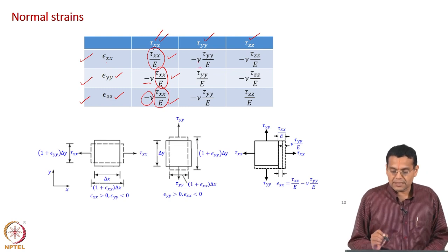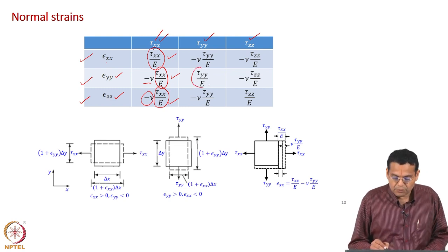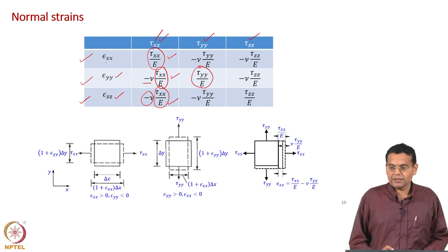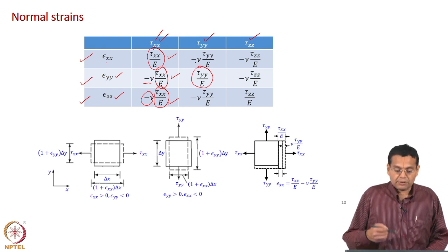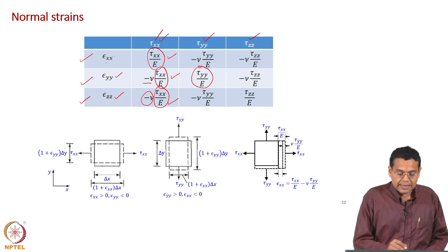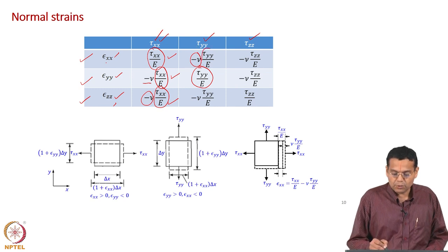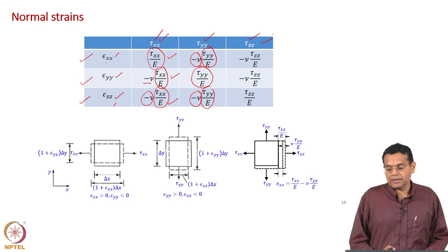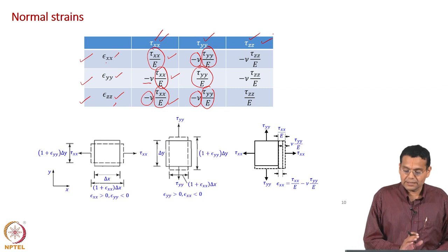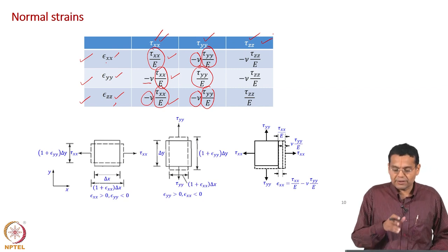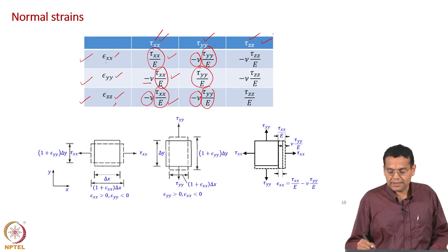Similarly, if you apply normal stress along y, the normal strain along y is tau_yy / E (same direction as stress). The perpendicular directions x and z each give minus nu * tau_yy / E. Likewise for stress along z. Now let us analyze a particular row — let us take the first row.